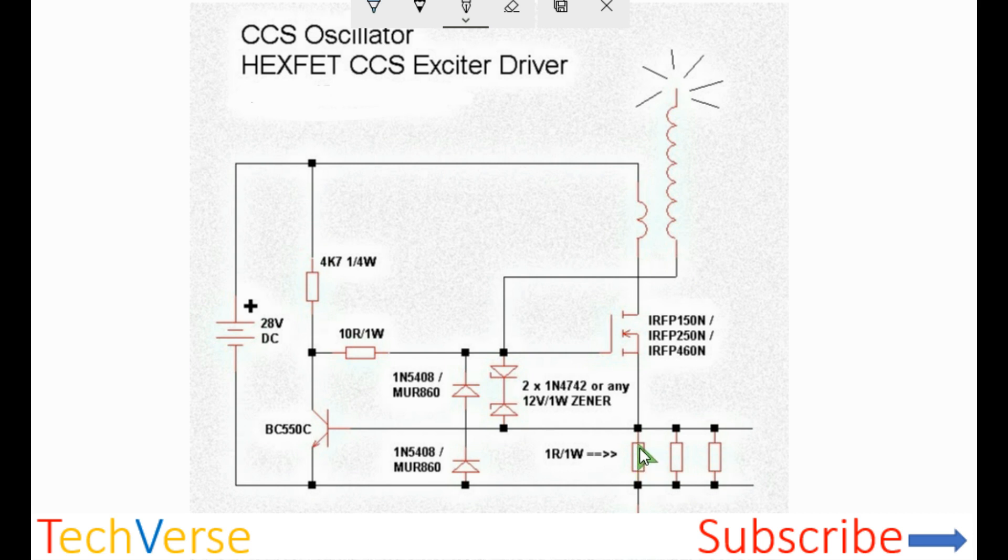When sufficient voltage has dropped across the current sense resistor, usually about 0.7 volts, the switching transistor will conduct and this will connect the gate of the MOSFET to ground, turning it off. The magnetic energy stored in the core will be transferred to the secondary windings.